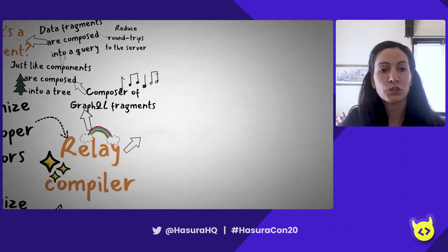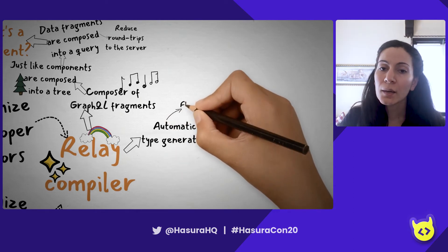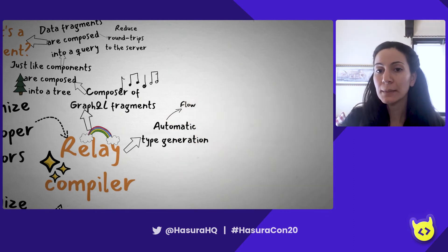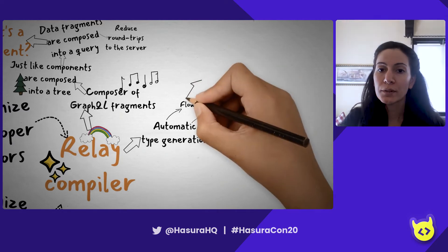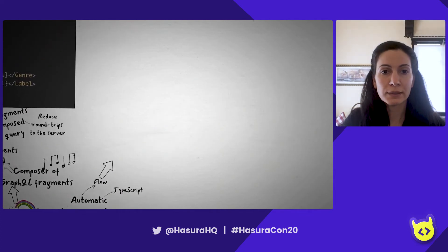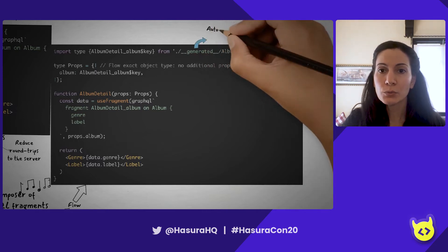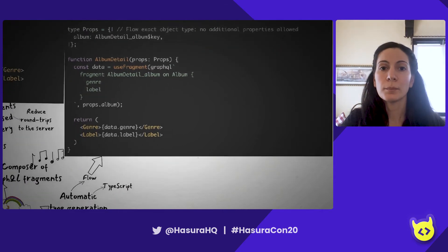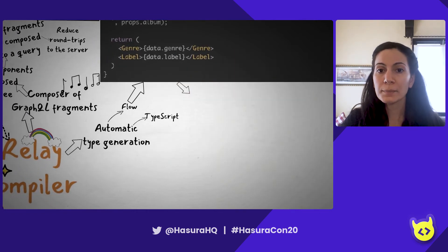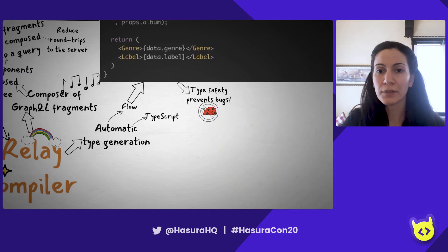So the Relay compiler does a bunch of other cool things. One of these is automatic type generation. By default they're Flow types, but if you wanted, you could also go with TypeScript. With the Flow types, here's an example — I'm importing the type which is auto-generated by the Relay compiler, and I'm checking my props against this type which I'm passing into my component. Types are great because type safety prevents bugs, so I recommend it.